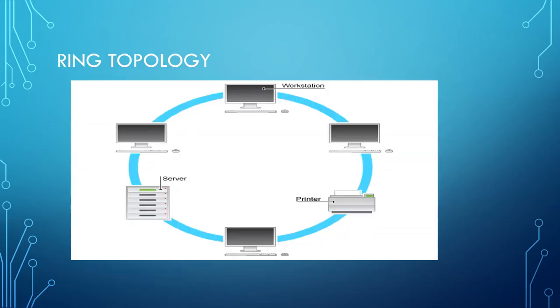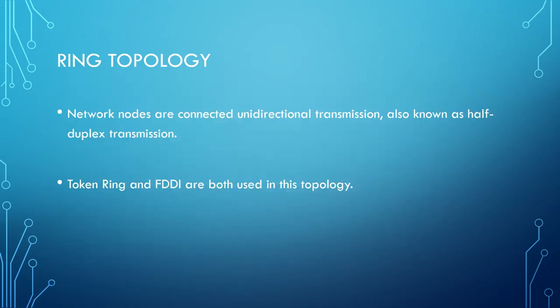In ring topology, computers form a logical ring connecting each device. Network nodes are connected via unidirectional transmission, also known as half-duplex transmission. This topology utilizes token ring and FDDI.